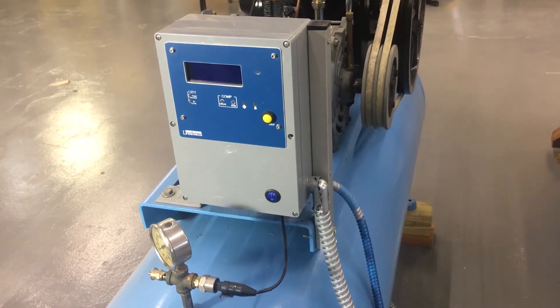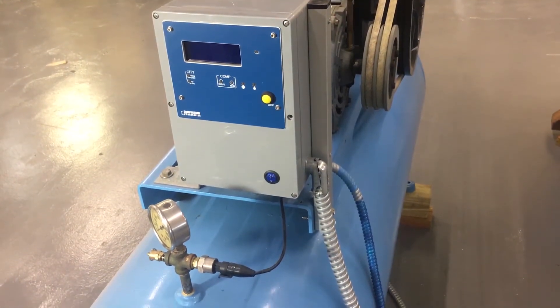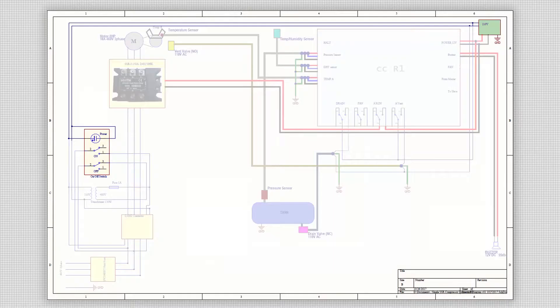Once the valves are connected, you can wire in the optional power rocker switch serially to the input of the power supply. This will allow you to turn the compressor controller on and off.